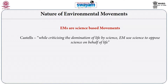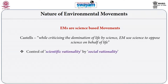Castells says environmental movements essentially pit science against science because new technologies and scientific advancements have resulted in the domination and control of humanity. Environmental movements try to free humanity from the control of science, and for that they also use scientific knowledge. In that sense, environmental movements aim at the control of scientific rationality by social rationality, leading to the emergence of a popular science.